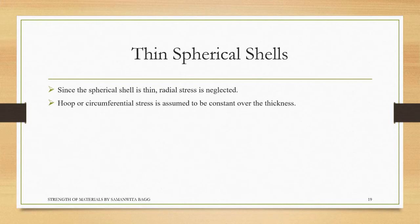Hoop or circumferential stress is assumed to be constant over the thickness, that is sigma_c will be uniformly distributed over the thickness. Longitudinal stress is not different since sphere does not have a length. There will be nothing called sigma_l because there is nothing called length in a sphere.